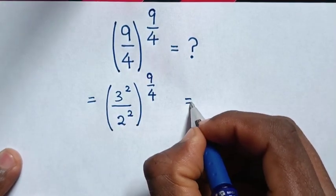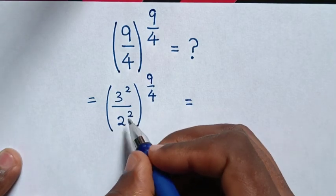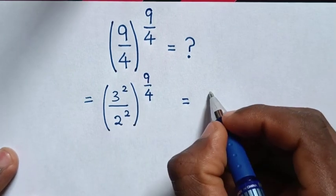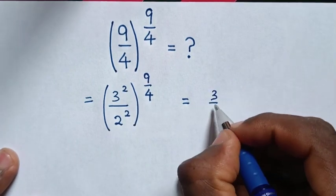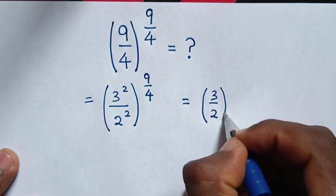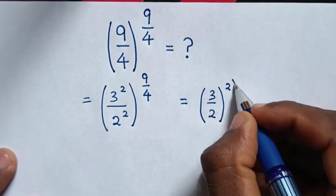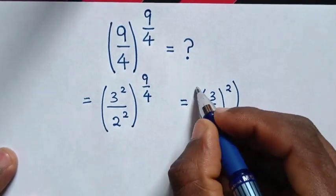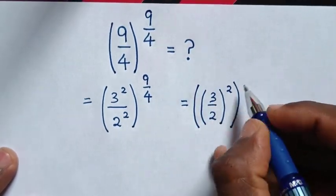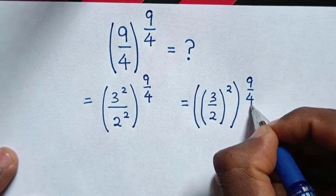Then it will be equal to: from here, power of 2 is common, so it will be 3 over 2, in bracket, power of 2, in bracket, power of 9 over 4.